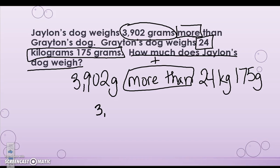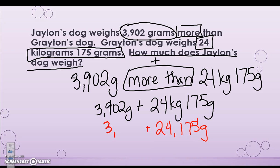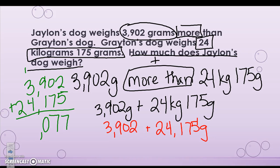So I'm going to add 3,902 grams plus 24 kilograms 175 grams. Now remember, our units are not the same, so we need to convert first before we add. Well, I know 24 kilograms equals 24,000 grams plus 175 is 24,175 grams plus 3,902 grams. I'll add these. 5 and 2 is 7, 7 and 0 is 7, 9 and 1 is 10 so I need to regroup, 3 and 4 is 7 plus 1 is 8. So I have 28,077 grams.